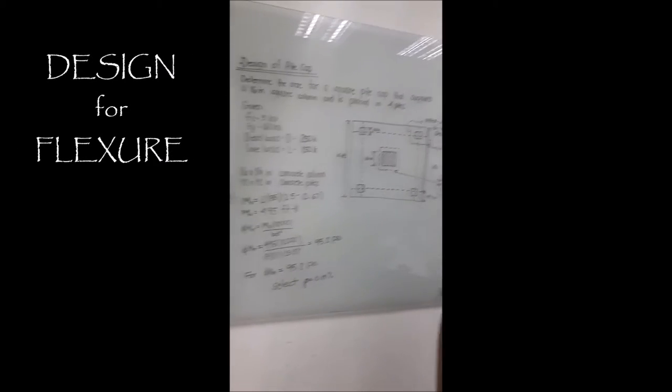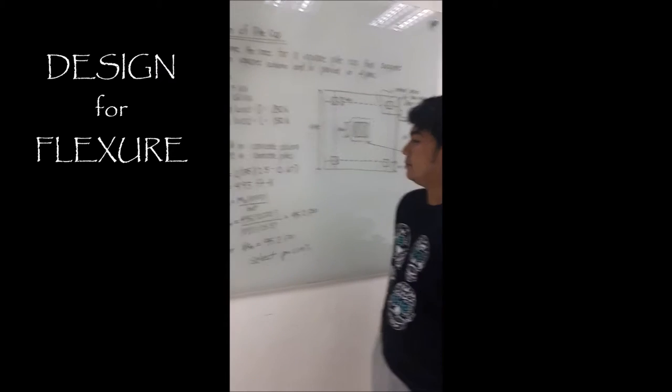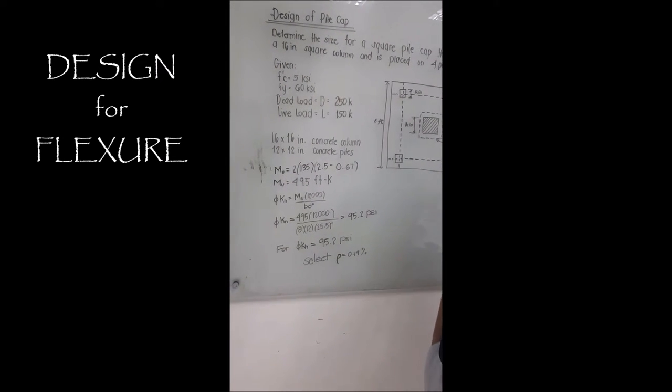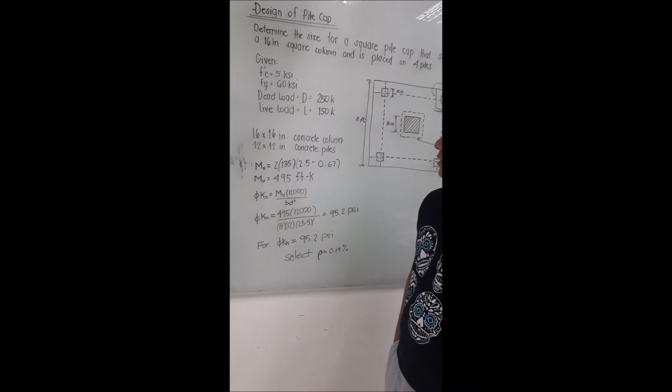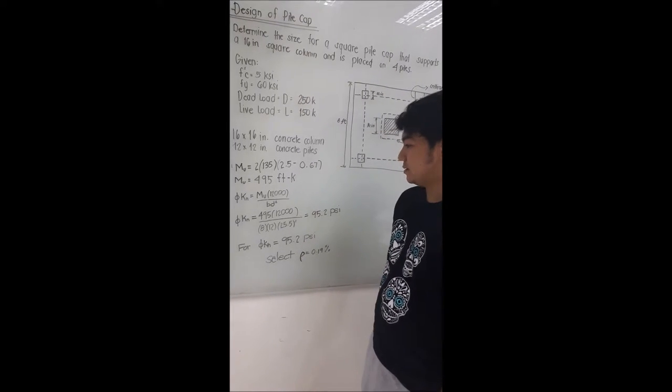For MU, we use 2 times 135 times 2 minus 0.69 and we get the MU of 495 foot-kips.